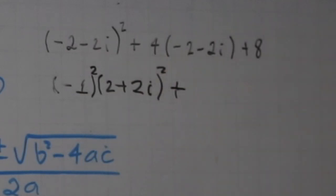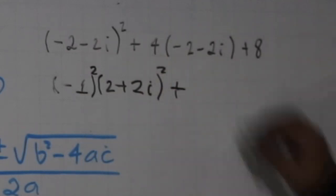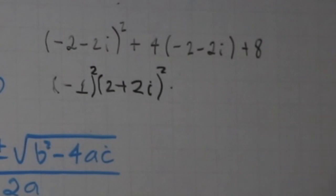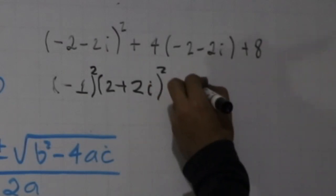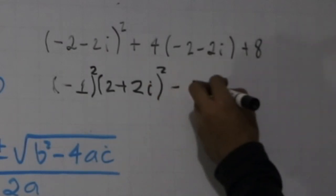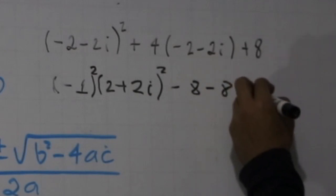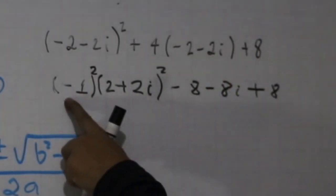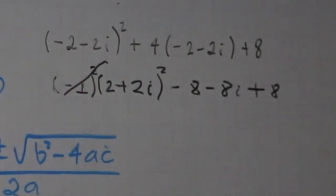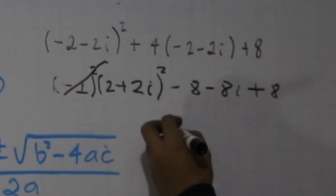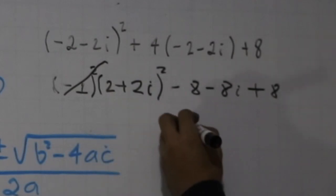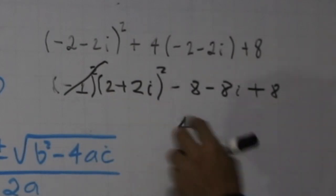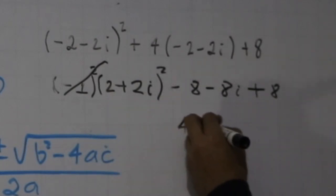And -8i plus the number 8 here. Negative 1 squared is going to be 1, so you can cancel that. And here we have 2², that's 4, plus 2 times.